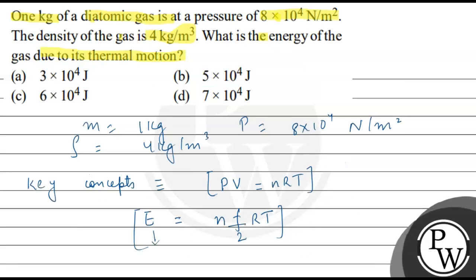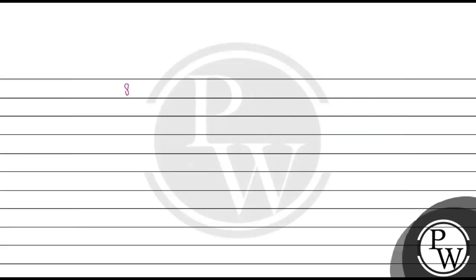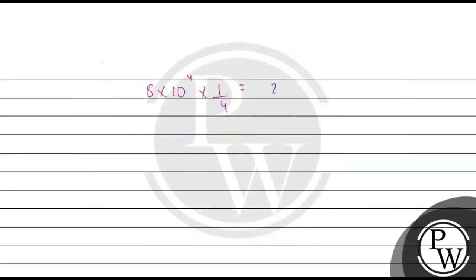And pressure is given. Pressure is given. Volume is given. And now we can find energy. Pressure is given as 8 into 10 to the power 4. And volume is 1 by 4. We can write from equation 1. And right side 2E upon 5. Now we can find E.